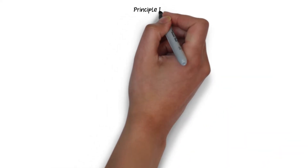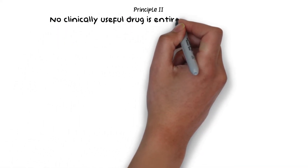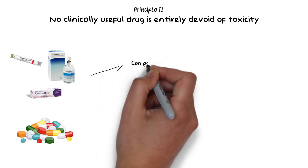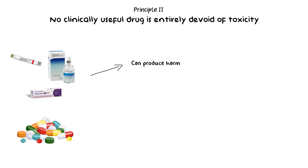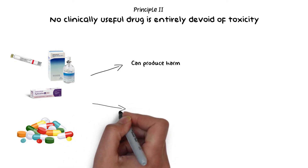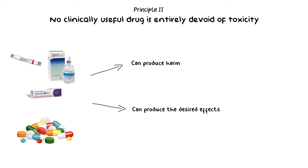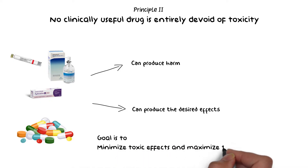The second principle is that no clinically useful drug is entirely devoid of toxicity. Local anesthetics, along with all other pharmaceutical drugs, are capable of producing harm if handled inappropriately. Conversely, any drug may produce the desired effect if handled the right way. Therefore, rational drug treatment is to maximize the therapeutic effect and minimize the toxic effects of any given drug.